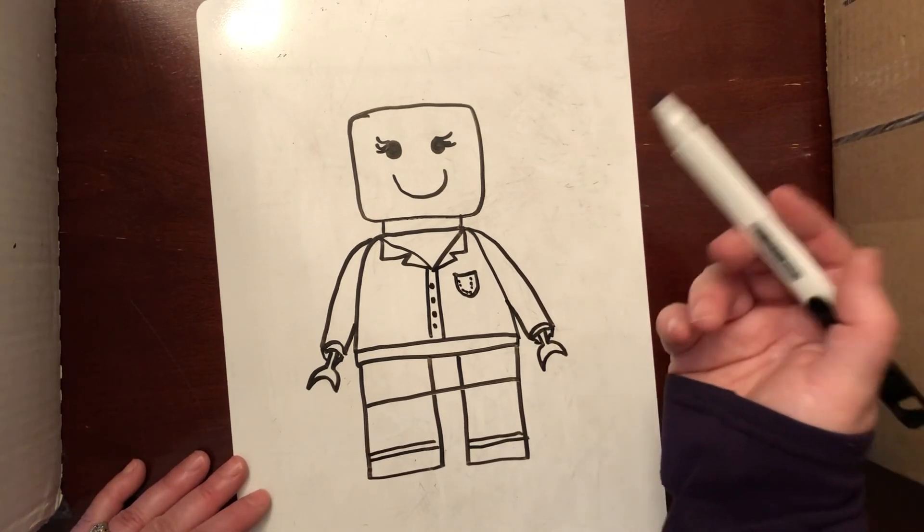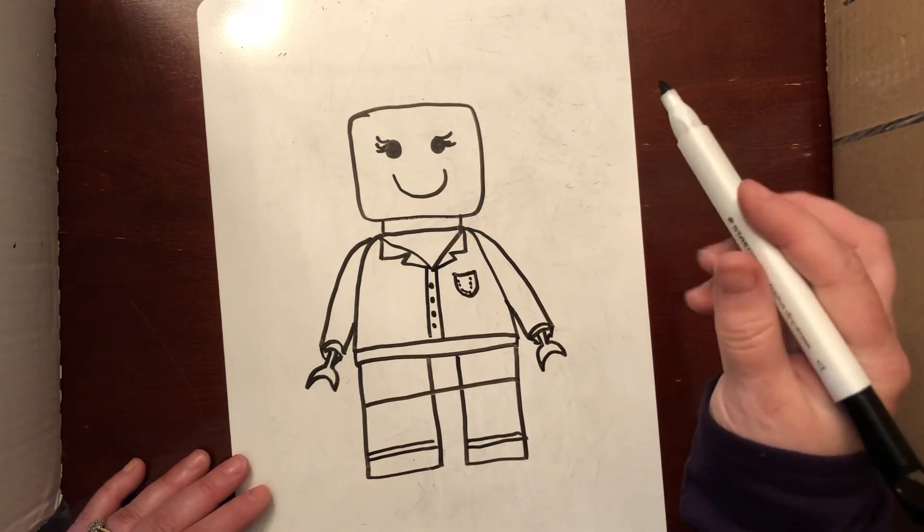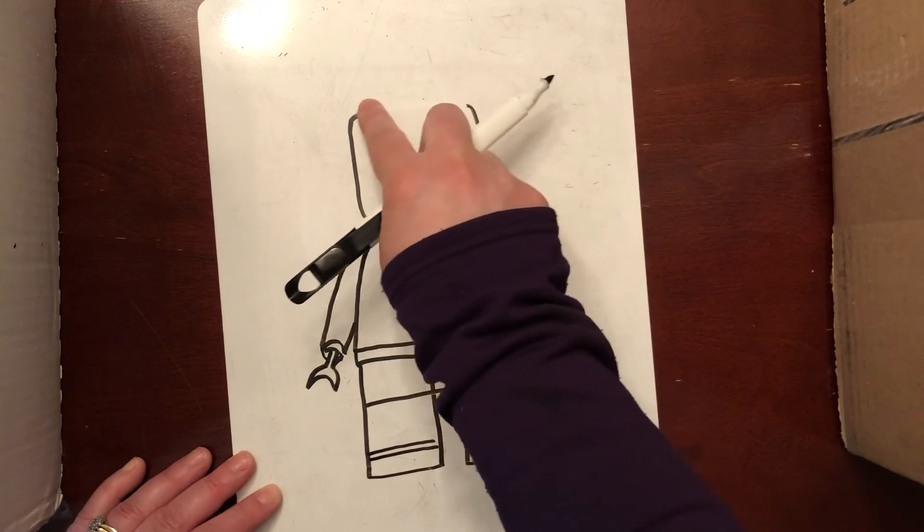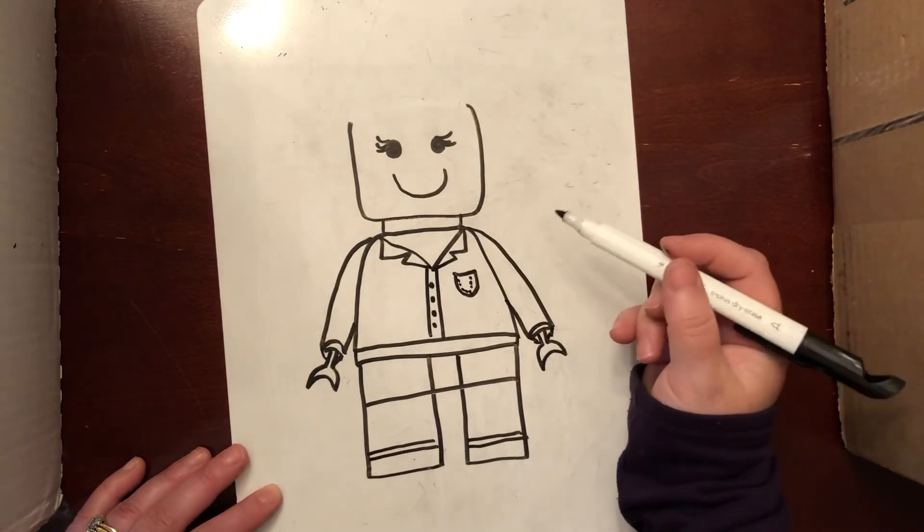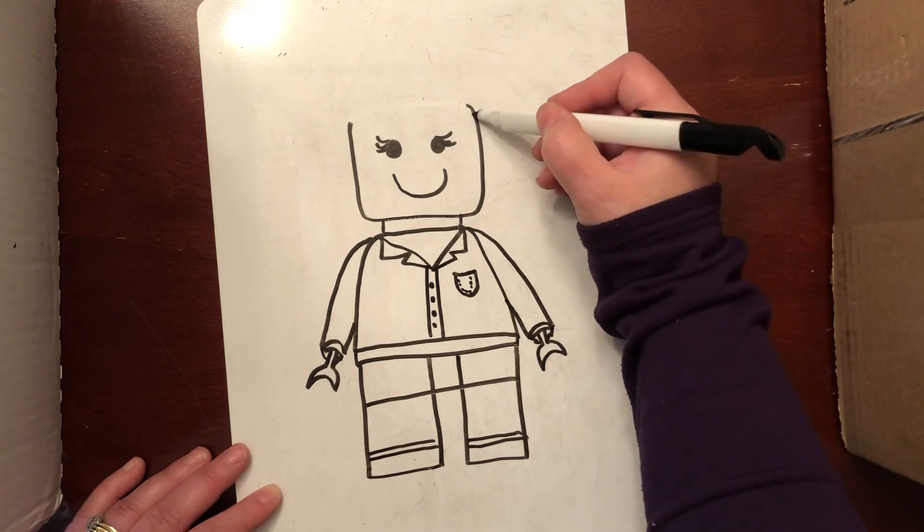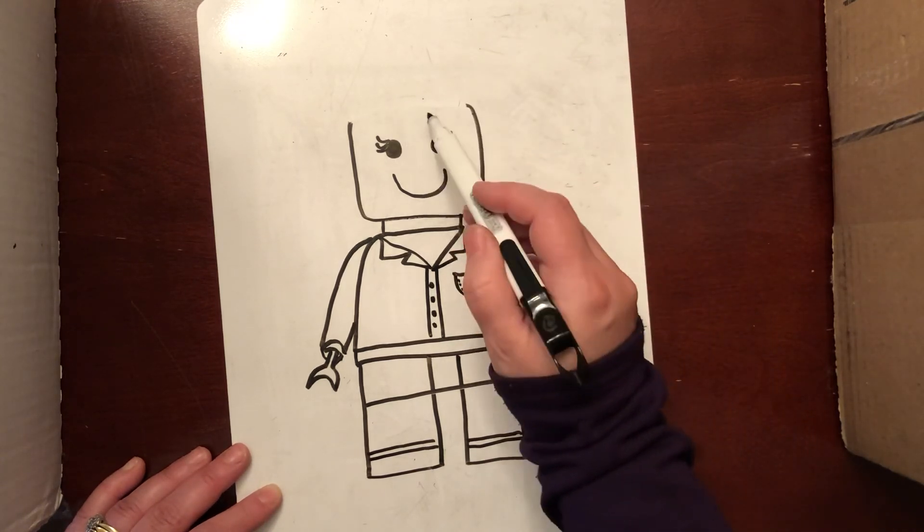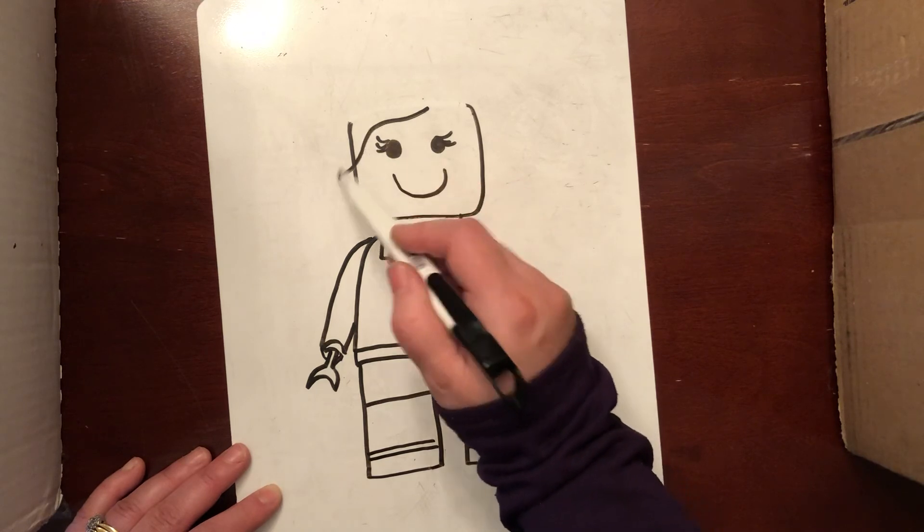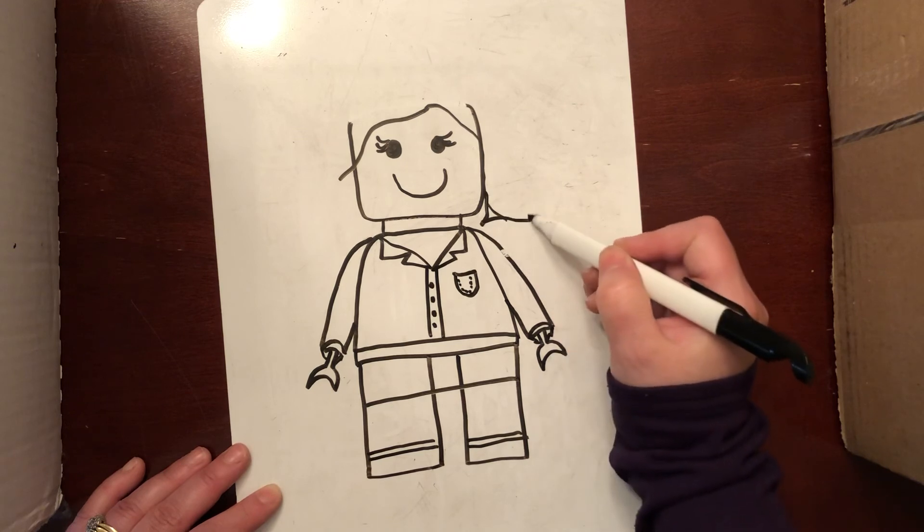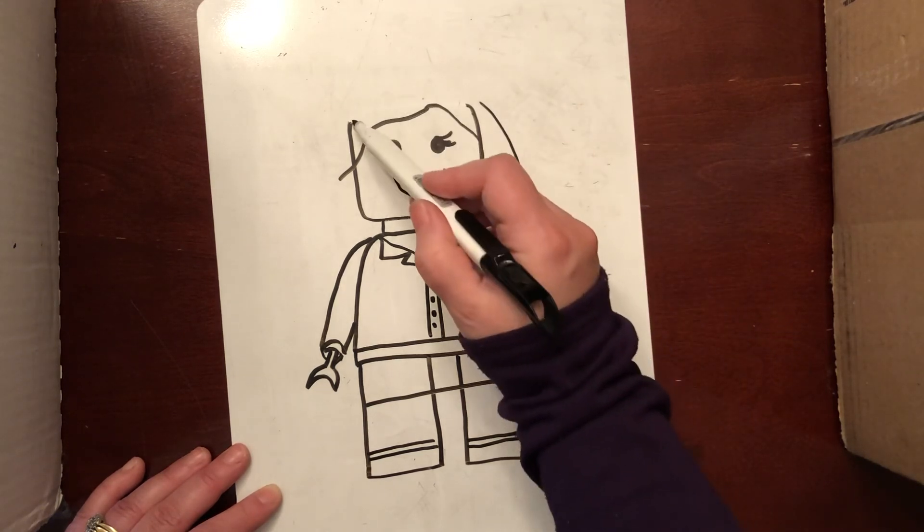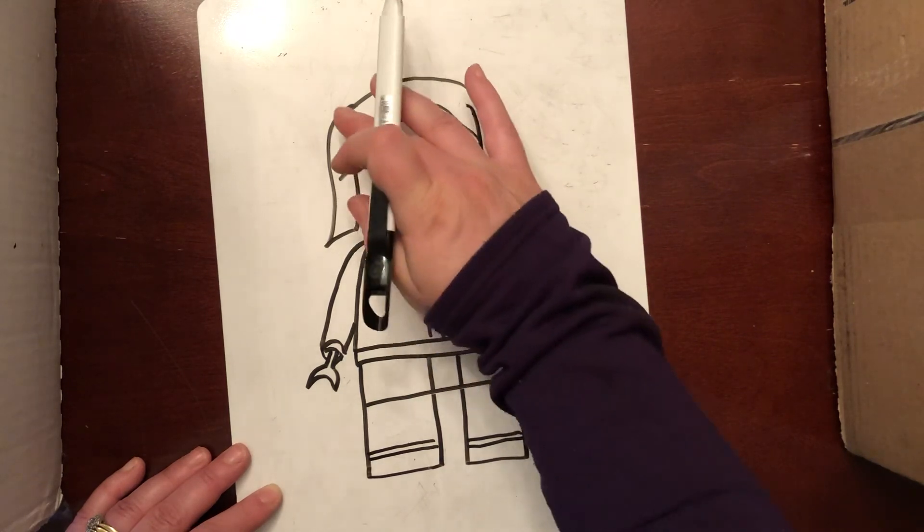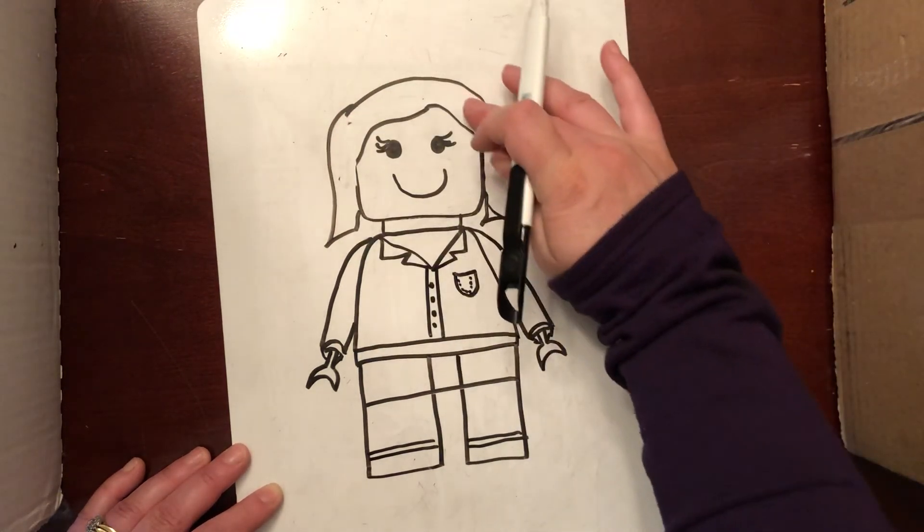Now we're going to work with the hair. Make sure you're drawing really lightly with your pencil because you're probably going to erase the top part of your head here, and maybe even some of the side. I think I'm just going to do a part in my hair and curve it up here. Then I'm going to erase those lines that I don't need.